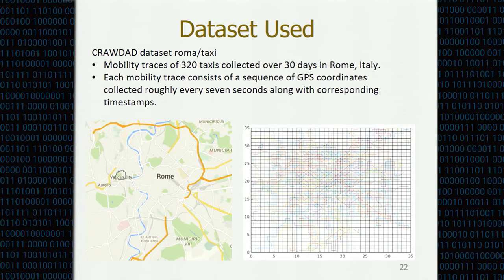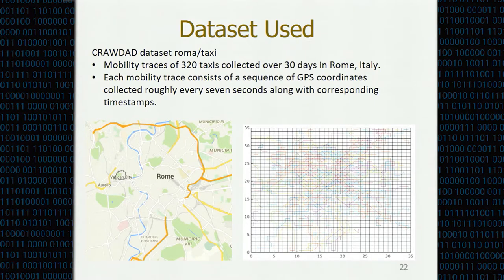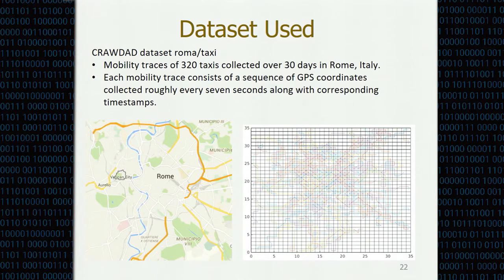Here is the dataset used in our evaluation. It consists of mobility traces of multiple taxis collected in Rome, Italy. We extracted the mobility traces in the center area of Rome city, as illustrated in the left figure. On the right figure, we show the distribution of the mobility traces — generally it is dense in the center area of the city while sparse in the other corners.